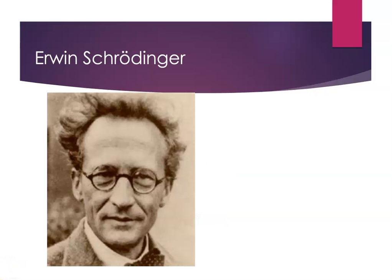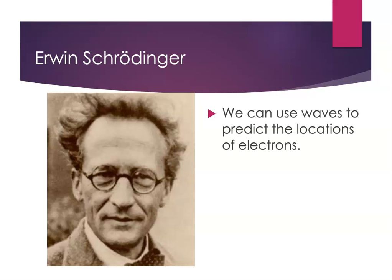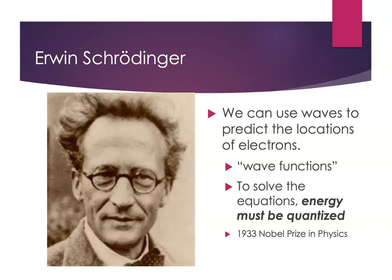The scientist who really brought all of these ideas together was Erwin Schrödinger. Schrödinger realized that we can use waves to predict the locations of electrons. He developed an equation — the Schrödinger equation — and solving it gave us wave functions, which allowed us to make these predictions. The math of this is very complex; it's not math that you're going to see in high school or as a first-year college chemistry student. So we're not interested in doing the math itself — what we want to talk about is what does the math mean? An important piece to take away is that solving the Schrödinger equation requires energy to be quantized. Only certain energy values are allowed in order to solve these equations. For this work, Erwin Schrödinger won the Nobel Prize in Physics in 1933.